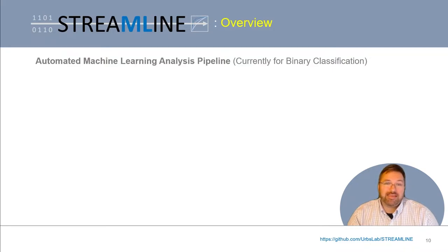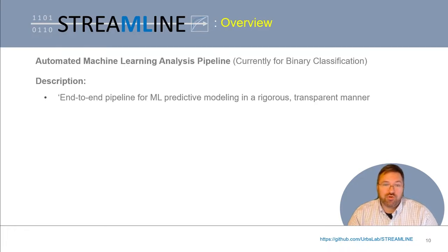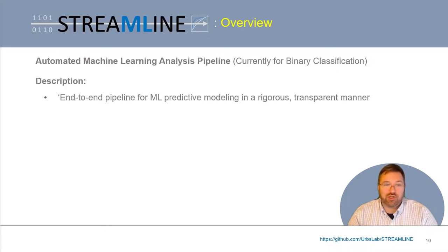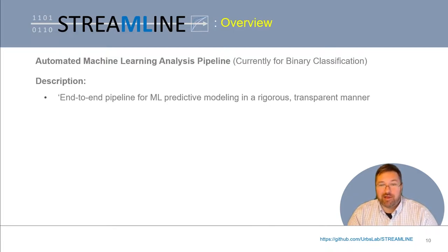In the meantime, you can try out Streamline on any tabular dataset if you binarize your outcome. In developing Streamline, our goal was to make an automated pipeline that covered and automated as broad a range of data science elements as possible, taking a user from their initial formatted data all the way through to generating a summary report highlighting key results with summary statistics, statistical significance evaluations, and results visualizations. We wanted this pipeline to conduct a machine learning analysis in a rigorous as well as transparent manner, reporting every aspect of what goes on inside the pipeline.